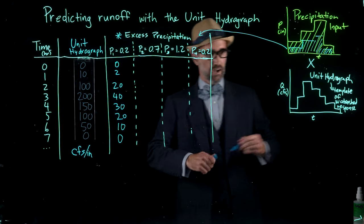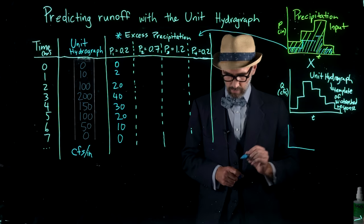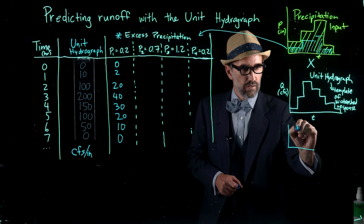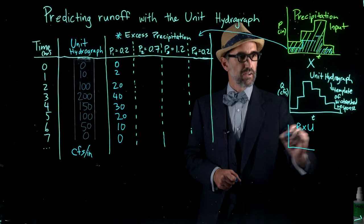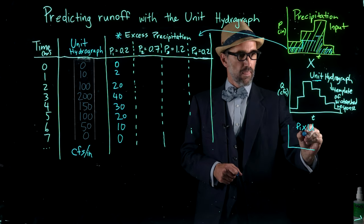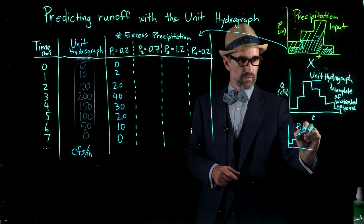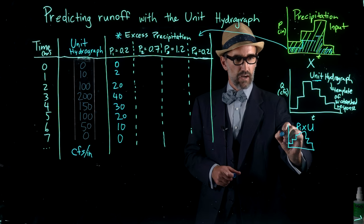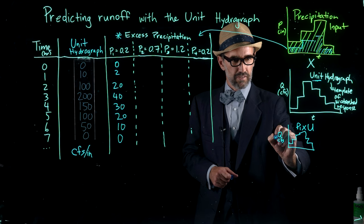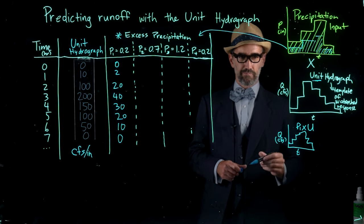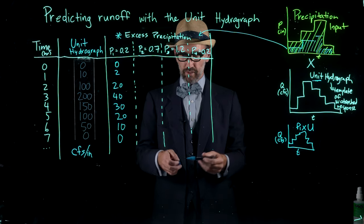So this is the first part of our runoff response. We'll make a series of smaller graphs over here. This is our p1 multiplied by our unit hydrograph. So this is our unit hydrograph here, and we have a hydrograph there in cubic feet per second through time. That's our first hydrograph that we've calculated in this table here.